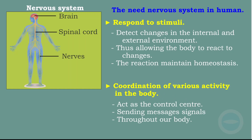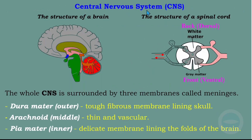The central nervous system covers the structure of the brain and the structure of the spinal cord. The whole central nervous system is surrounded by three membranes called meninges. These three membranes are: the dura mater, which is the outer membrane; the arachnoid, which is the middle membrane; and the pia mater, which is the inner membrane. Together, these membranes are called meninges.